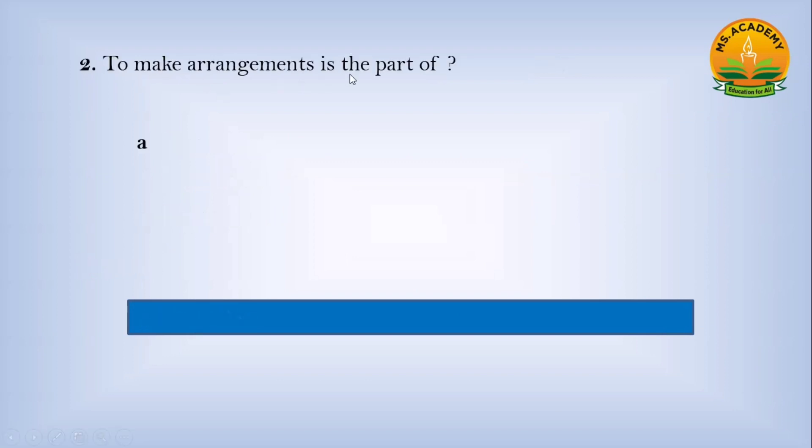To make arrangements is the part of: Option a) Planning, Option b) Organizing, Option c) Coordinating. Answer: b - Organizing.